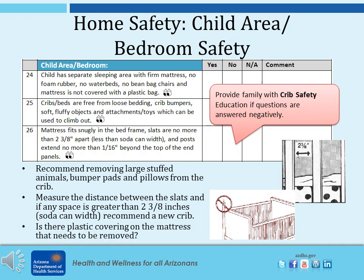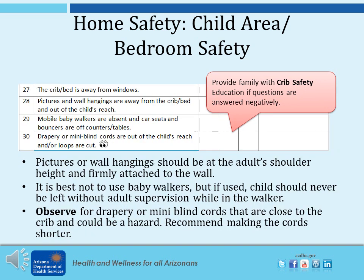For child area safety, make sure the child has a separate sleeping area, the crib is free from loose bedding, and the mattress fits snugly in the bed frame. Recommend removing large stuffed animals, bumper pads, and pillows from the crib. Measure the distance between the slats, and if any space is greater than a soda can width, recommend a new crib. Also make sure there is no plastic on the mattress. Make sure the crib or bed is away from windows, pictures, and wall hangings; mobile baby walkers are absent; car seats and bouncers are off counters and tables; and drapery or mini blind cords are out of reach of the crib — if cords are a hazard, recommend making them shorter.